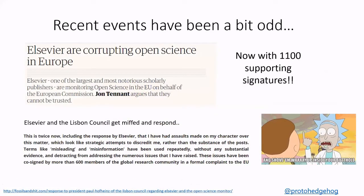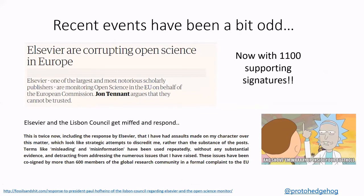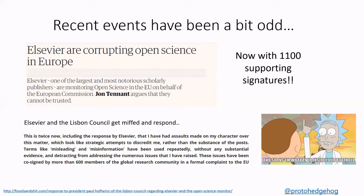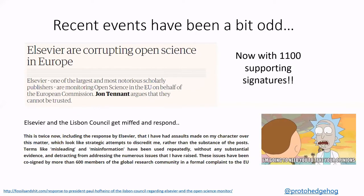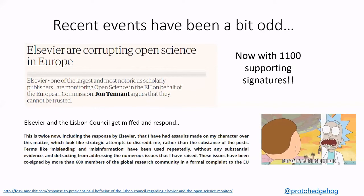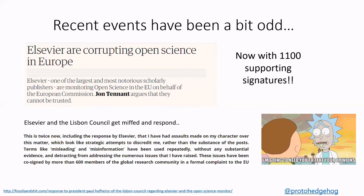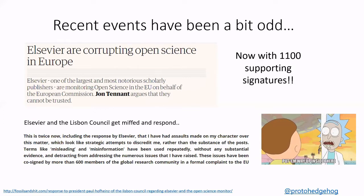Looking wider in Europe, Elsevier are now going to be providing data and analytics for the future of open science in Europe through the Open Science Monitor. Over 1,100 of us wrote a statement trying to fight against this — we called them out, saying Elsevier is corrupting open science in Europe. A lot of Elsevier's databases are incredibly biased, they're closed source, the data itself is closed, and they don't support the principles of open science. So why are they being allowed to essentially define the future of open science in Europe?